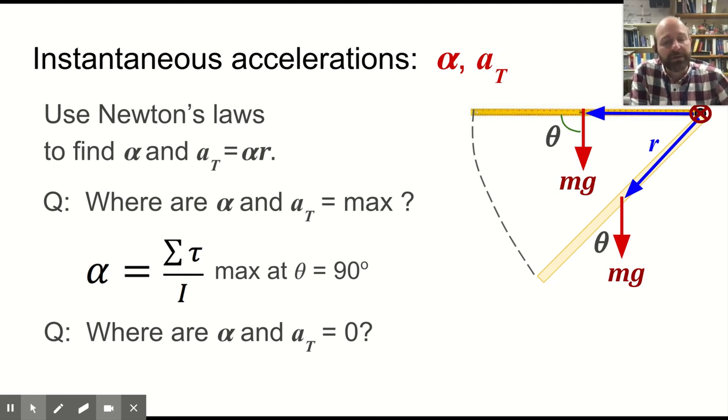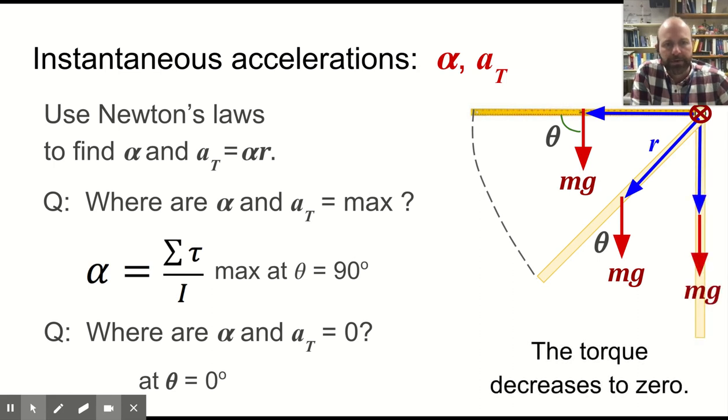And where will they be zero? Well, alpha will be zero when the angle is zero, when it's pointing straight down, because the force of gravity and the R vector will be pointing in the same direction. The torque decreases as it falls until it's zero at the bottom, which hopefully makes sense. At the bottom, you're moving the fastest, but there's no force pushing you at that point, and then you swing back up and slow down. This is a modified or a physical pendulum, as we might call it.